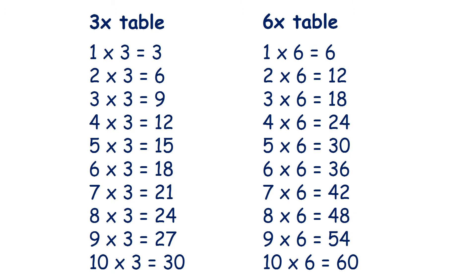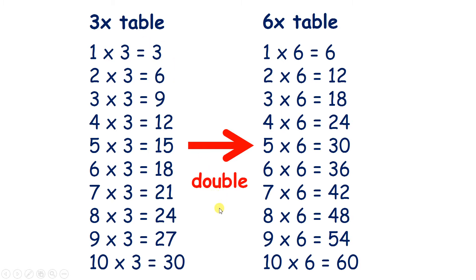Now we have our three times table and our six times table written out. If we have the three times table we can double to get the six times table, and remember doubling is the same as multiplying by two. So if you have a number, multiply it by three and then multiply it by two, you've multiplied it by six, because three times two is six.